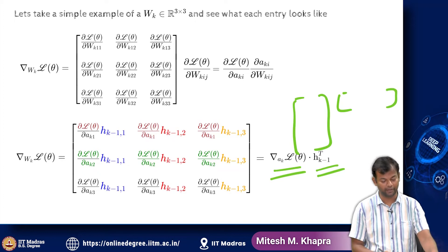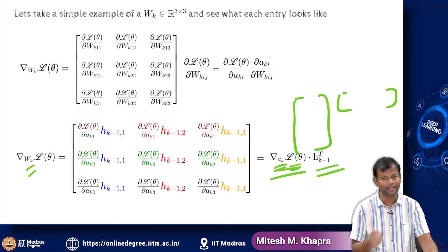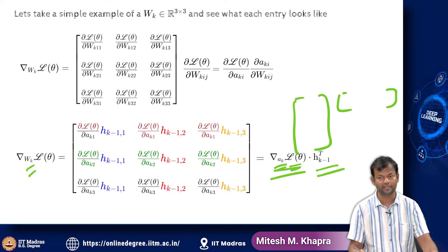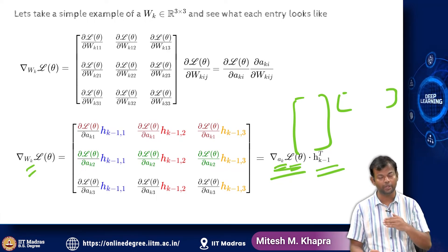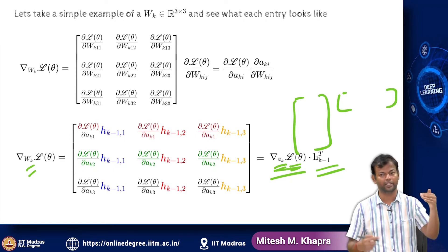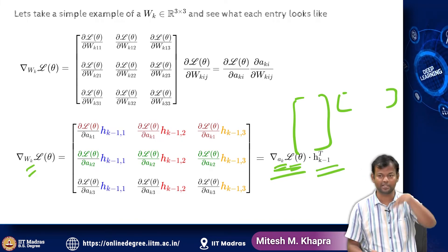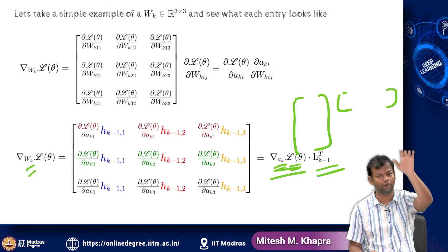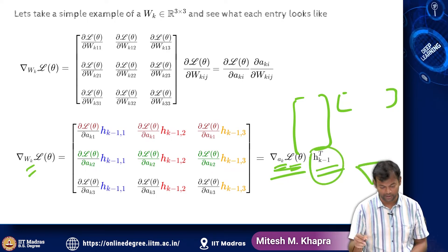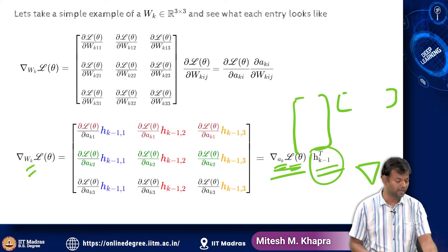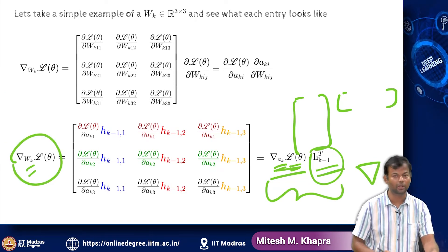So you now have a formula for the derivative of the loss function with respect to W_k, and you need two quantities: the derivative of the loss function with respect to A_k, which was computed in the previous lecture, and the activation at the (k-1)th layer h_{k-1}, which you compute during the forward pass. The forward pass computes every activation in the network, so h_{k-1} requires no gradient computation. Both quantities are available, so you can compute the derivative of the loss w.r.t. W_k.